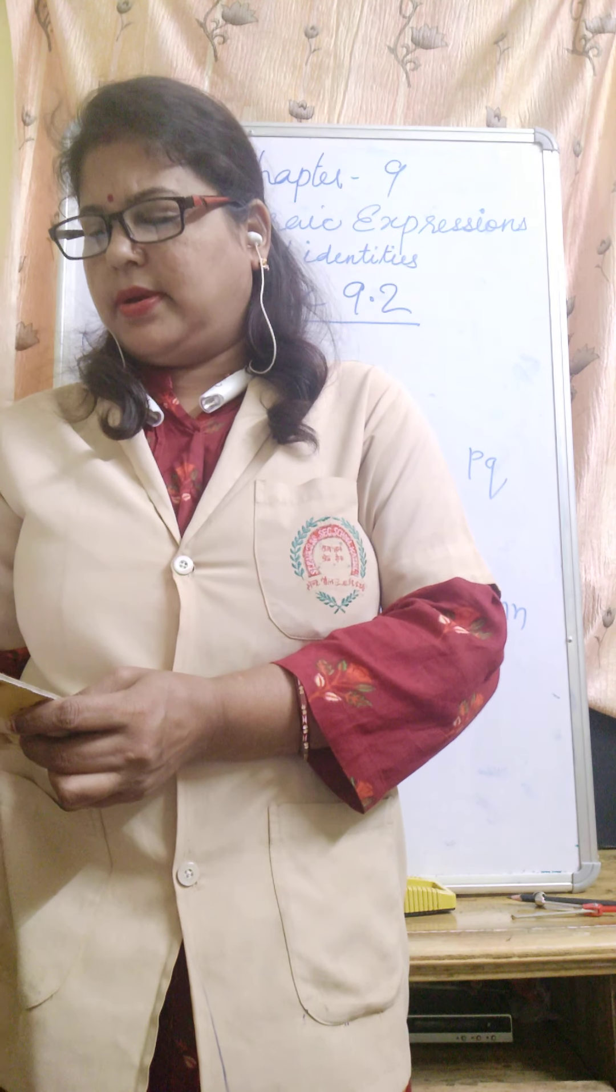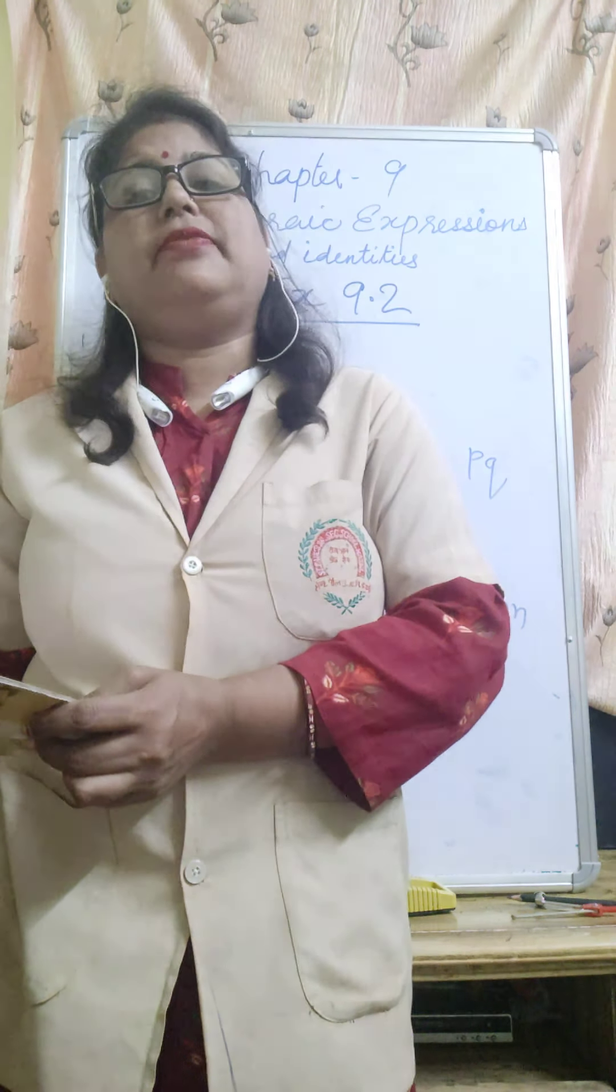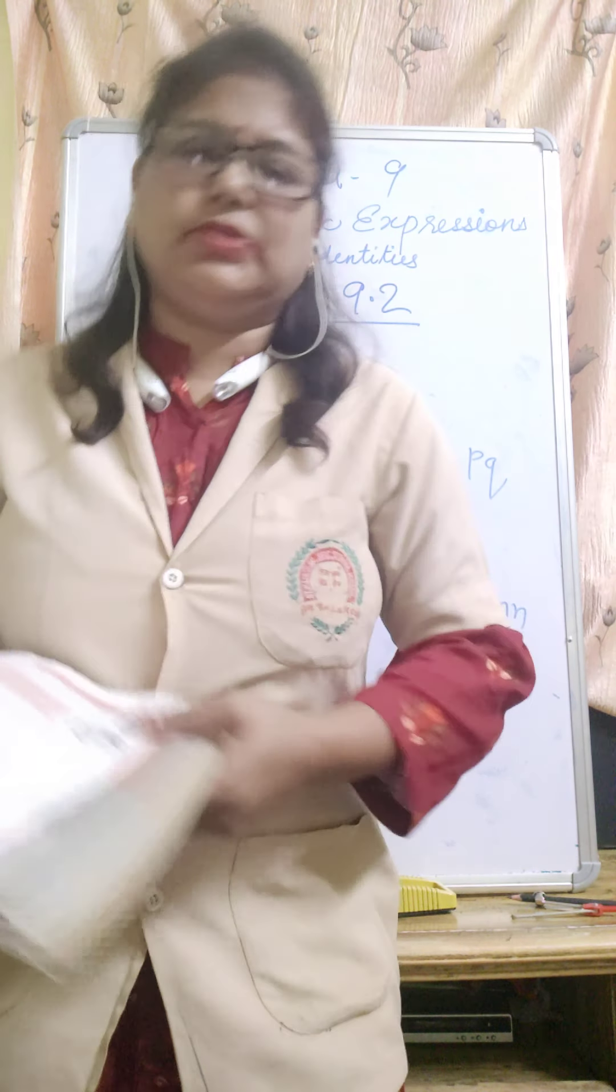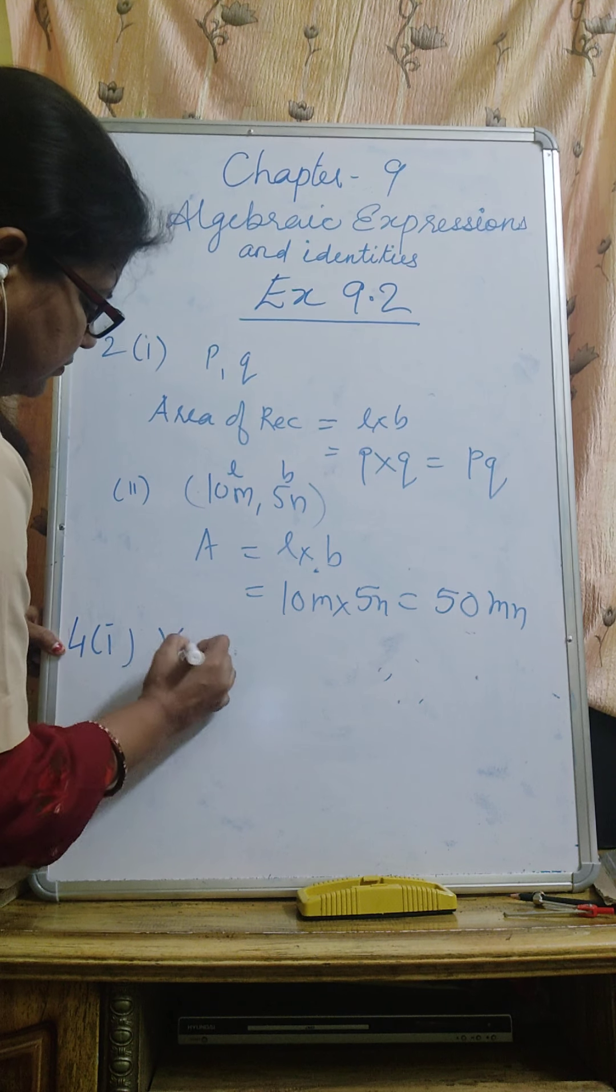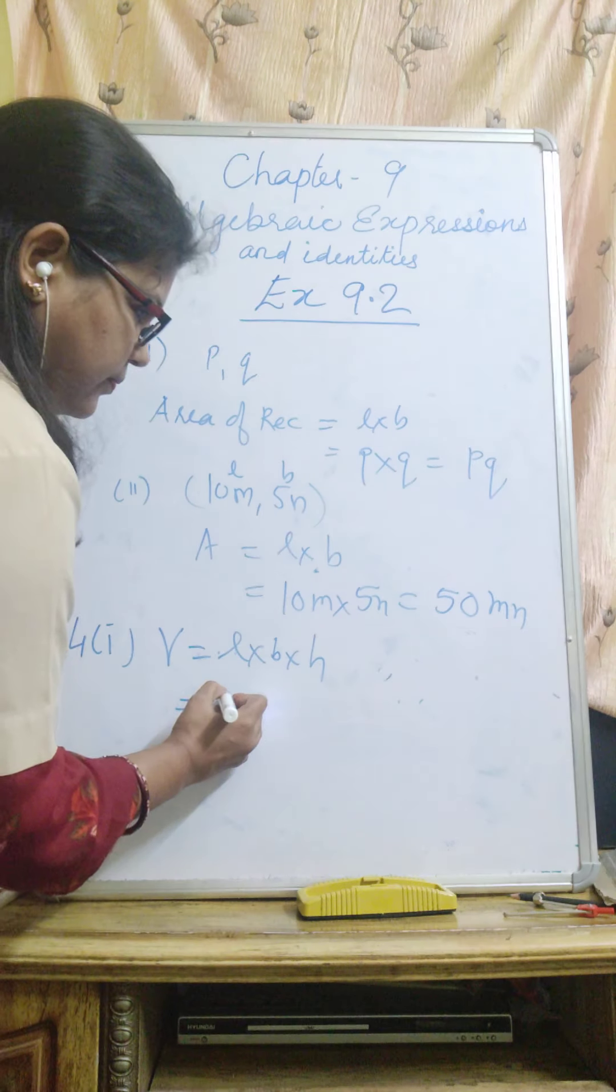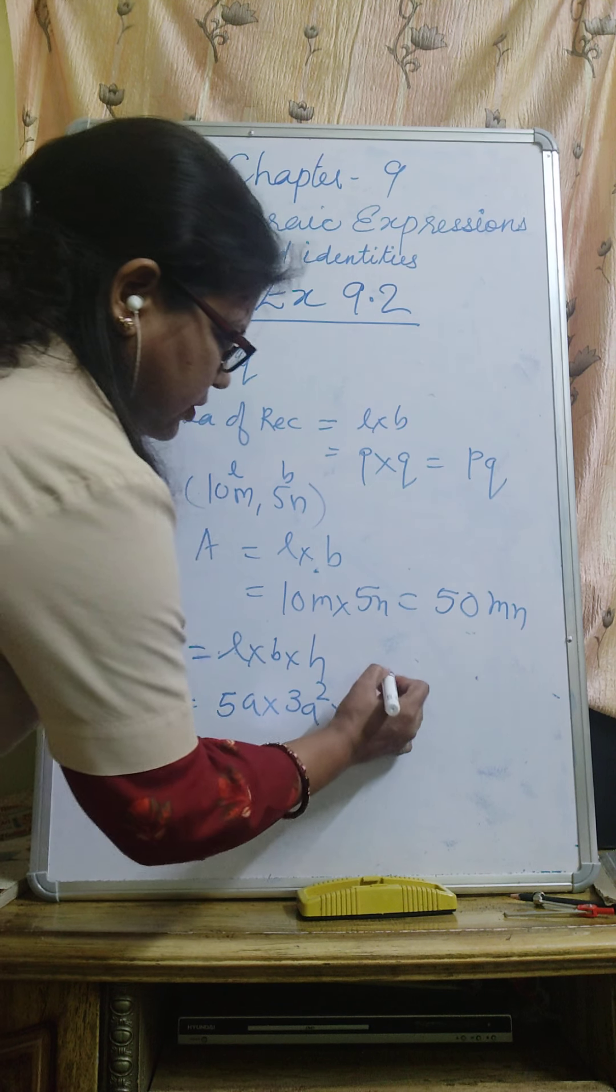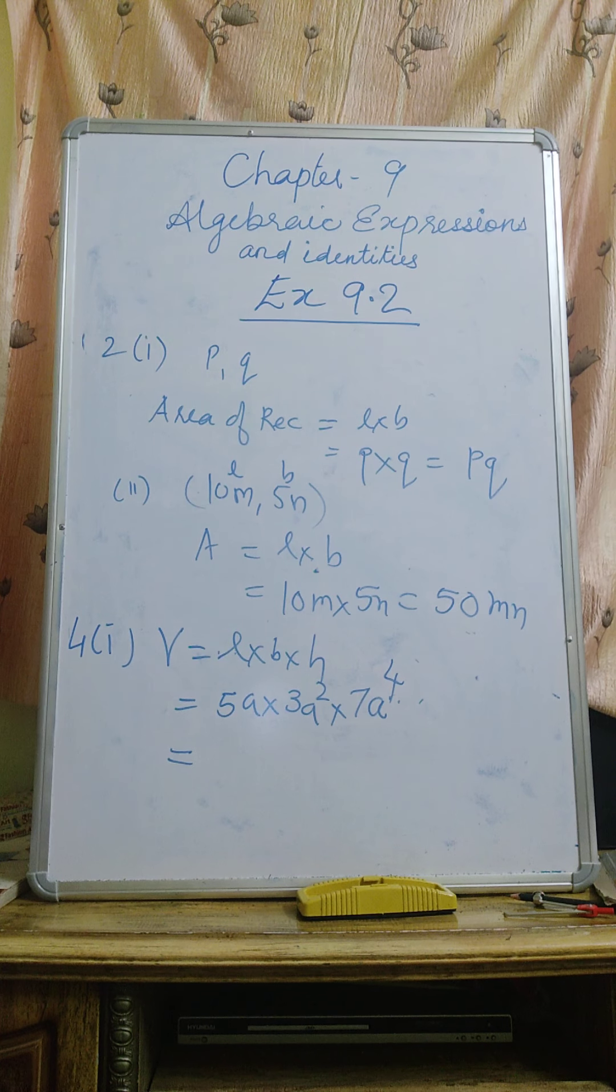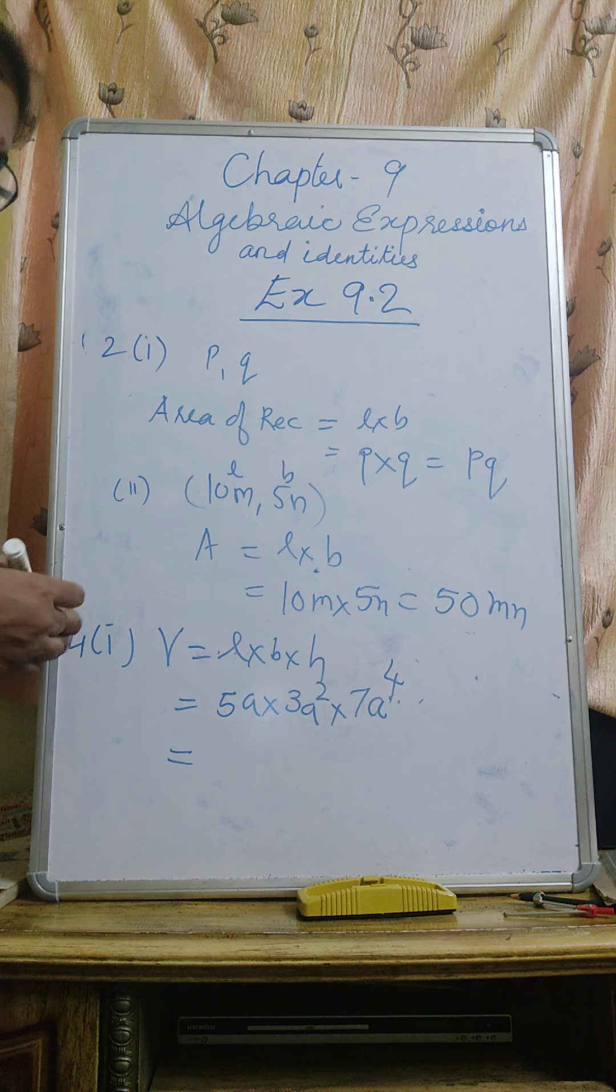Question number 4, obtain the volume of rectangular boxes. Volume means three dimensional figures are having volume. The dimensions are 5A, 3A square, and 7A to the power 4. Volume equals L into B into H. If any object is having volume, that means it is a 3D object.